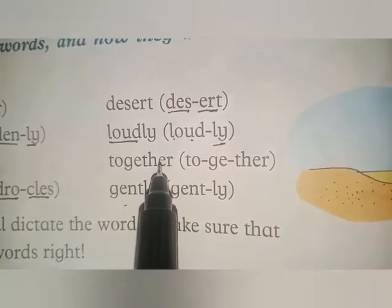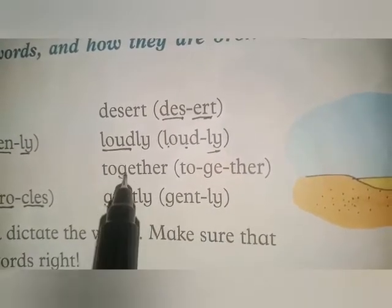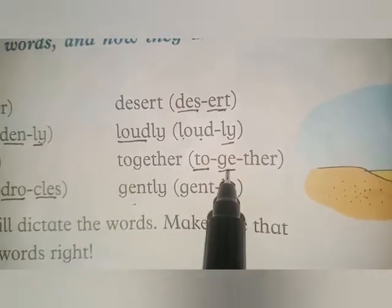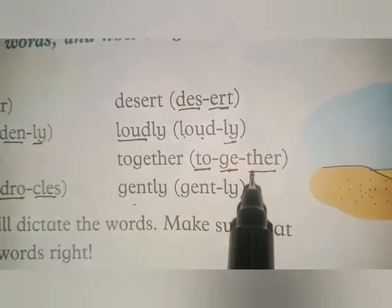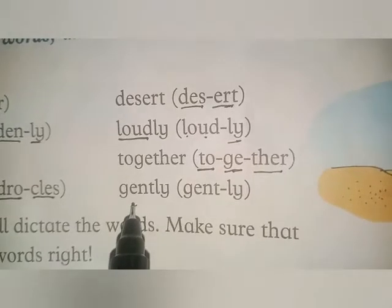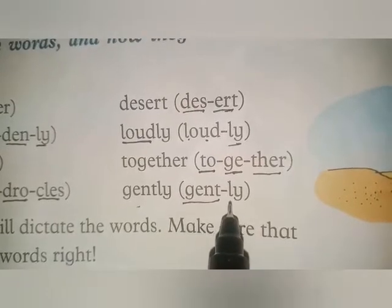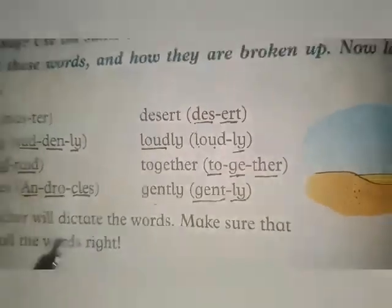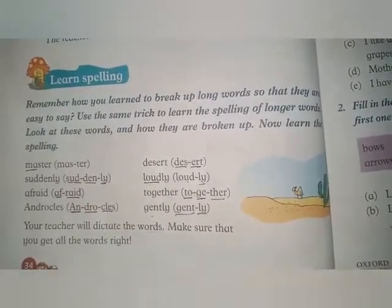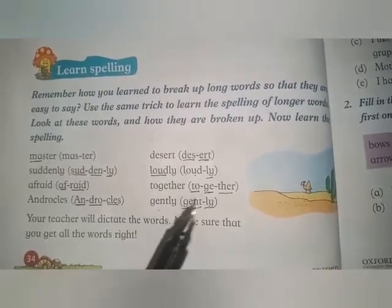In this method you read in syllables — sometimes there are two syllables and sometimes three syllables. Some words have two syllables and some have one syllable. Next word: 'together'. T-O — 'to', G-E-T — 'get', H-E-R — 'her': together. Last word: 'gently'. G-E-N-T — 'gent', L-Y — 'ly': gently. Now students, you must pronounce these words and then write them in your notebook. When you write them after learning, you will also learn the spelling.